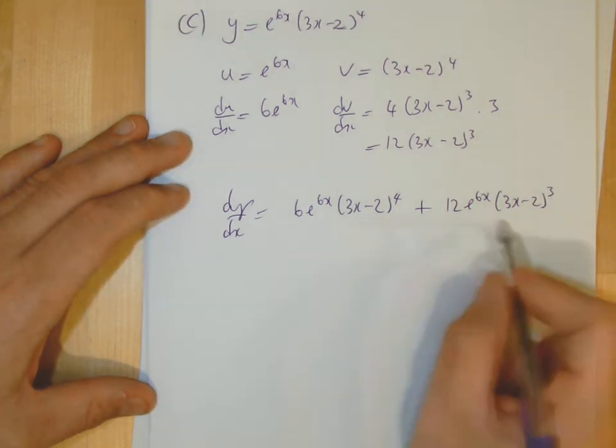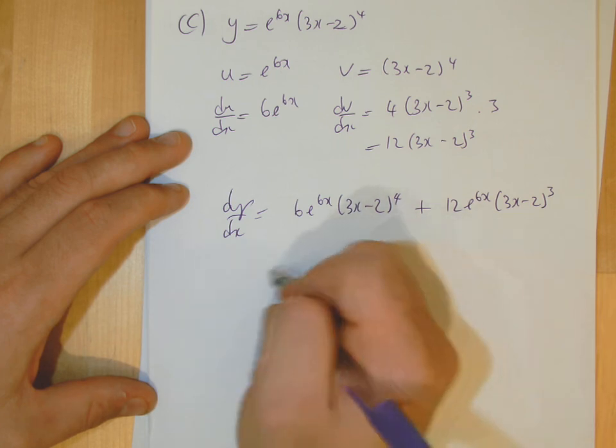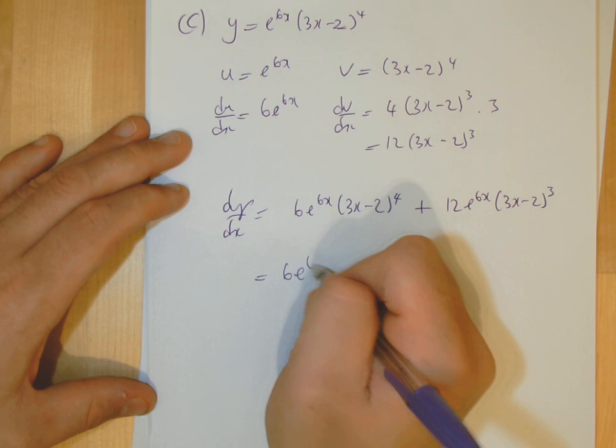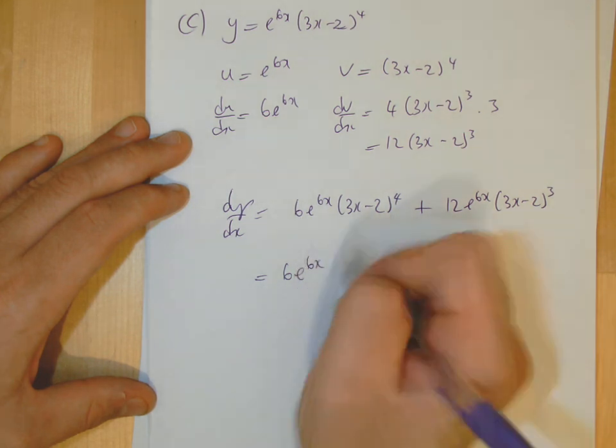What I would do then is I would, to simplify, you need to factorize. You'd expect this, so don't just leave it like this. Take out 6e to the 6x, because 6e to the 6x goes in both, and the bracket cubed.